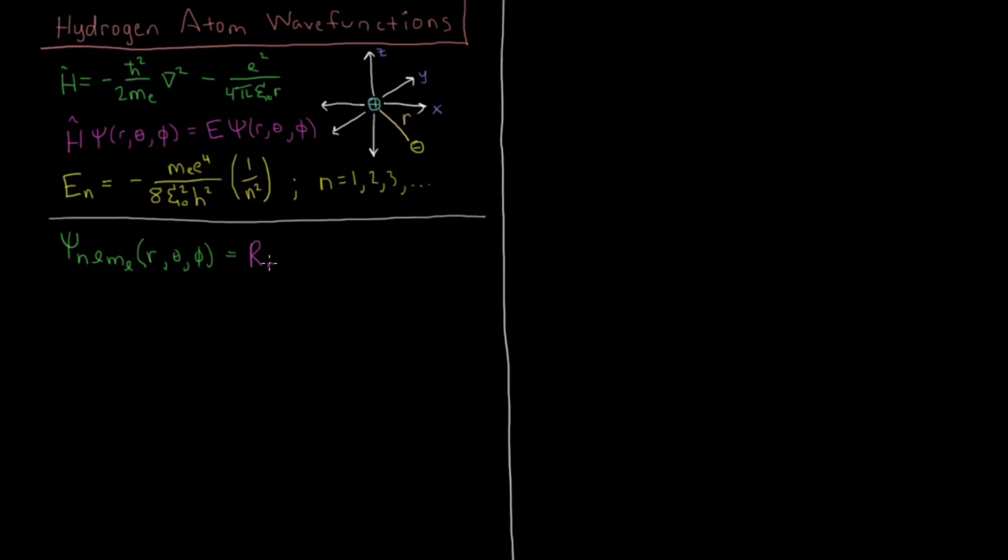And we can do another separation of variables type trick to separate it into two parts: one which depends on the radial part. And notice that this depends on the quantum number n and the quantum number l for what this function is as a function of r. And then we're going to have an angular part, which is going to be our spherical harmonics.